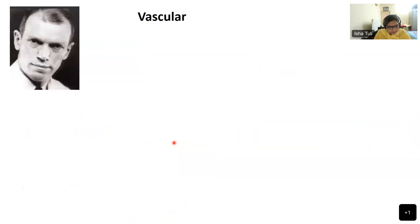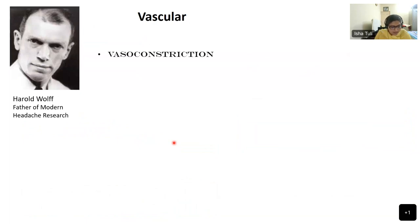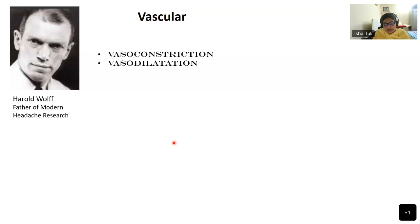How does migraine occur? Harold Wolf, known as the father of modern headache research, in the 1940s suggested a vascular basis to migraine symptoms. He identified that aura stems from vasoconstriction and headaches are a result of vasodilatation of blood vessels. Vasodilators such as carbon dioxide were used to relieve aura, and patients avoided caffeine because of its vasoconstrictive effects. Harold Wolf is supposed to have force-fed his residents large amounts of caffeine so he could observe aura-like symptoms. He himself was a migrainer, which is probably why he was very interested in this field.